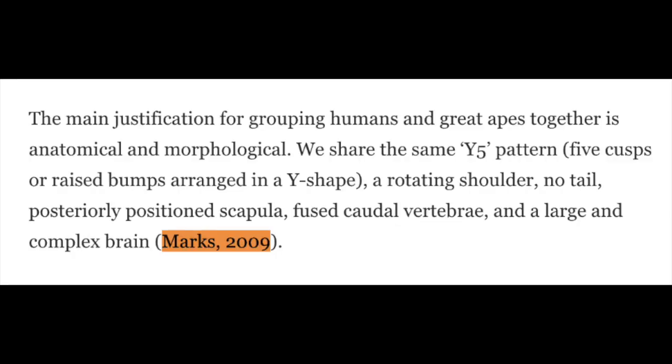Marx in 2009 said apes are something that have no tail, a fused tailbone vertebrae, a large brain, and a rotating shoulder. Well, let's actually look at these things in detail.